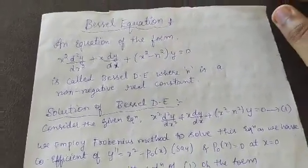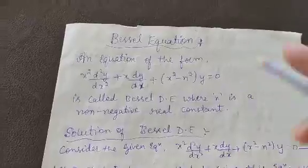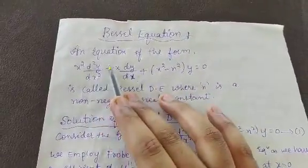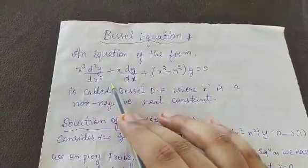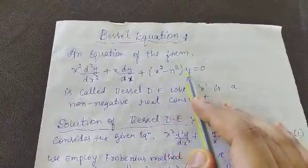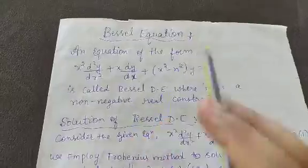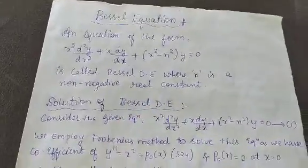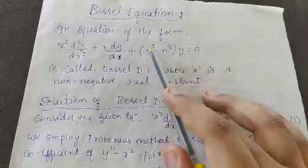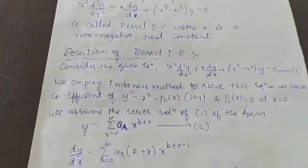Good morning students. Today we will study about the Bessel equation. An equation of the form x² d²y/dx² + x dy/dx + (x² − n²)y = 0 is called the Bessel differential equation, where n is a non-negative real constant. So the Bessel equation is a second order differential equation.